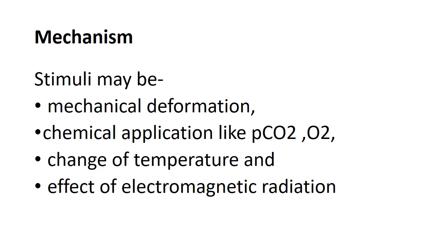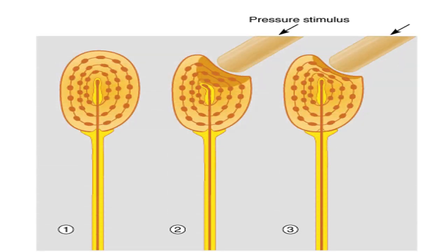Regarding stimulation mechanisms, threshold stimuli can cause mechanical deformation. Chemical application can change the membrane potential, as can temperature changes and electromagnetic radiation. In Pacinian corpuscles, when a pressure stimulus is applied, there is deformation of the corpuscle, and the central nerve terminal is also deformed, leading to ionic changes.